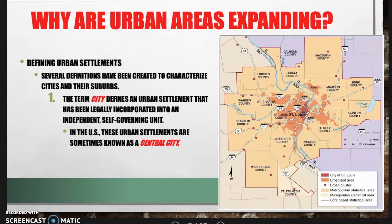In the United States, these urban settlements are sometimes known as central cities. To be classified as a city and incorporated, you have to apply to the state, which then recognizes the smaller division of power. Cities are under the jurisdiction of the state and are given their jurisdictional powers by the state. Here we have the city of St. Louis — technically, the red area shows the city limits of St. Louis.